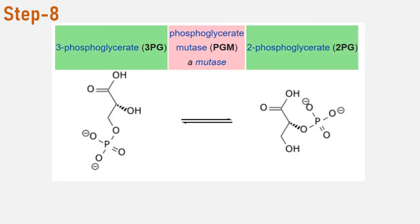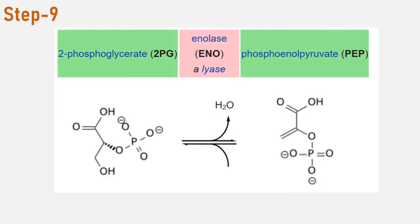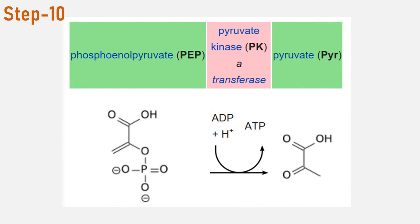The enzyme phosphoglycerate mutase then converts the 3-phosphoglycerate molecule into 2-phosphoglycerate. The enolase enzyme then acts upon the 2-phosphoglycerate molecules to convert them into phosphoenolpyruvate molecules. The last step of glycolysis involves the dephosphorylation of the 2 phosphoenolpyruvate molecules by pyruvate kinase to create 2 pyruvate molecules and 2 ATP molecules.